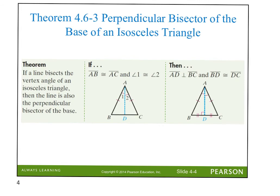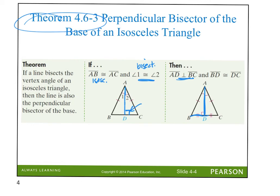I've got one last theorem, and it's about isosceles triangles. If a line bisects the vertex angle of an isosceles triangle, then the line is also the perpendicular bisector of the base. So if segment AB is congruent to AC, and angle one is congruent to angle two — meaning a segment is bisecting the vertex angle — then you can conclude that AD is a perpendicular bisector to BC. It creates perpendicular lines and also bisects BC, making two congruent parts.